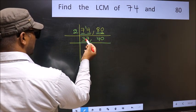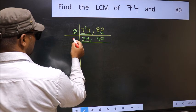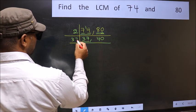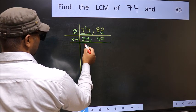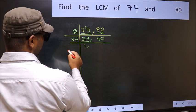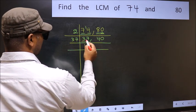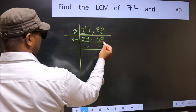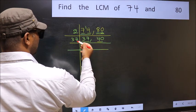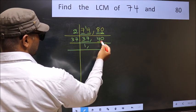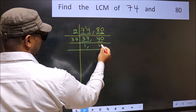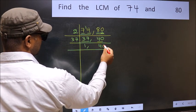Now here we have 37. Since 37 is a prime number, we write 37 once. The other number 40 is not divisible by 37, so we write it down as it is.